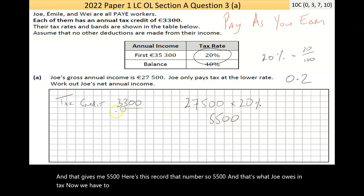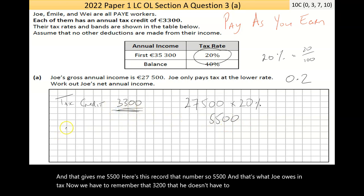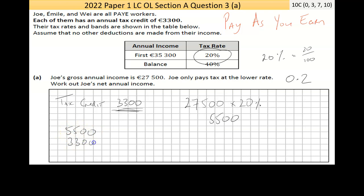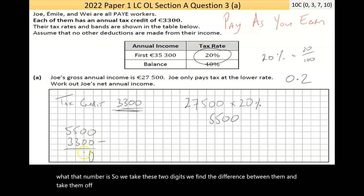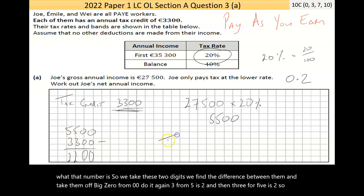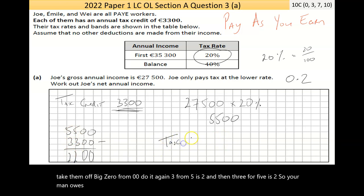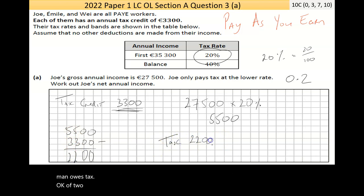We have to remember the 3,300 tax credit that he doesn't have to pay. So we find the difference: 5,500 minus 3,300. Zero from zero is zero, three from five is two, three from five is two — so Joe owes tax of 2,200.